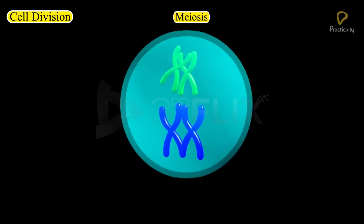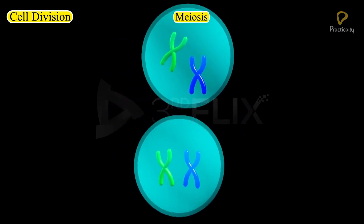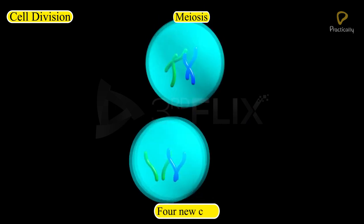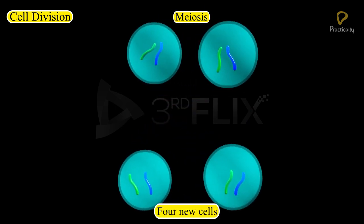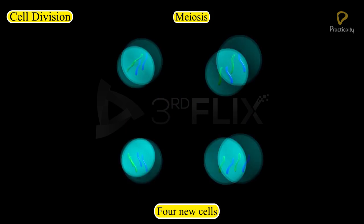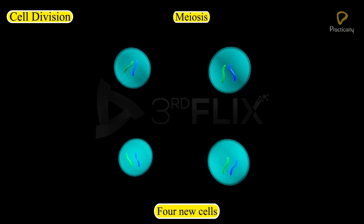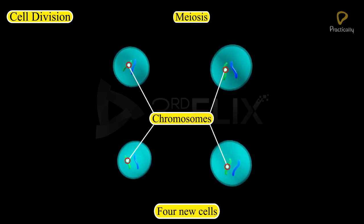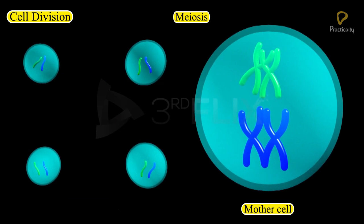When a cell divides by meiosis, it produces four new cells instead of just two. The new cells only have half the number of chromosomes compared to that of the mother cells.